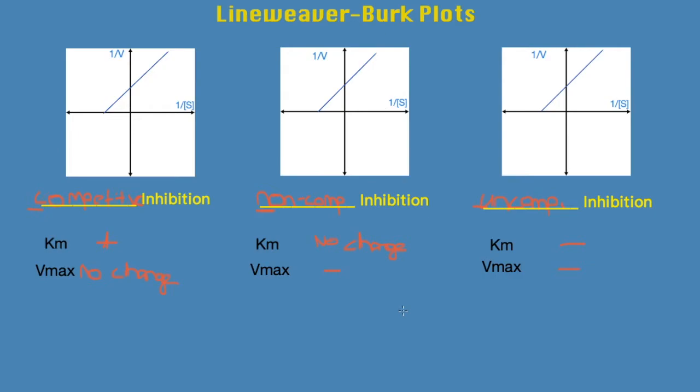And the next thing you want to know is what effect the inhibitor will have on the graph. We want to see what the Lineweaver-Burk plot would look like once the inhibitor is used, so we'll start over here with competitive inhibition.